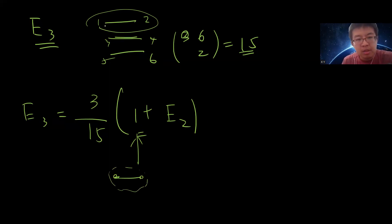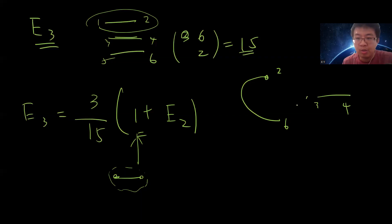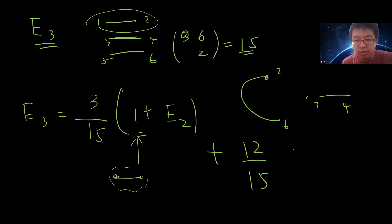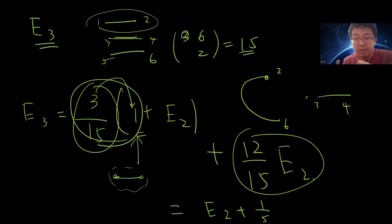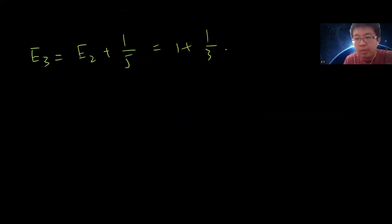If instead I choose ends from different noodles — say one and five — those two noodles merge into one longer noodle, and the remaining situation is still E_2. So the 12 out of 15 remaining choices also give E_2. Therefore E_3 = (3/15)×(1 + E_2) + (12/15)×E_2 = E_2 + 3/15 = E_2 + 1/5. So E_3 = 1 + 1/3 + 1/5.